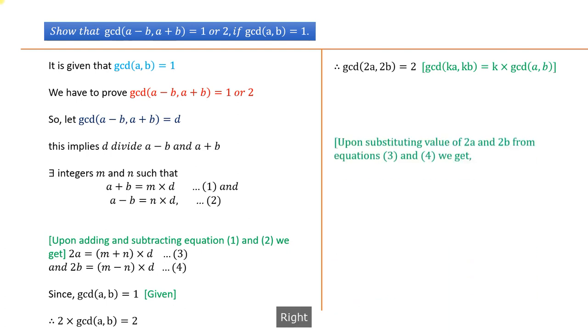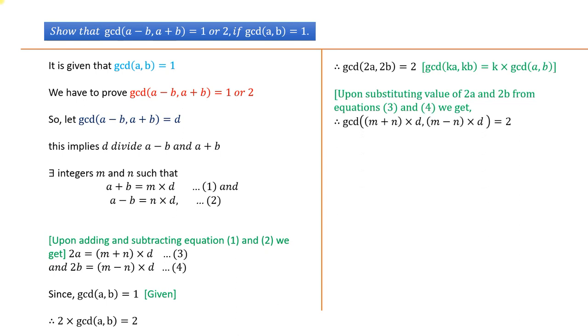Upon substituting values of 2a and 2b from equations (3) and (4), we get GCD of (m + n)d and (m - n)d.